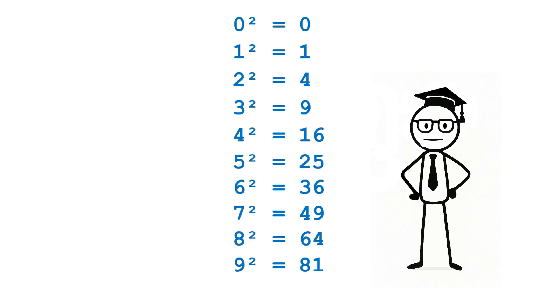And it starts with step 1. Say it with me. 0 squared equals 0... 9 squared equals 81. Boom. Done.